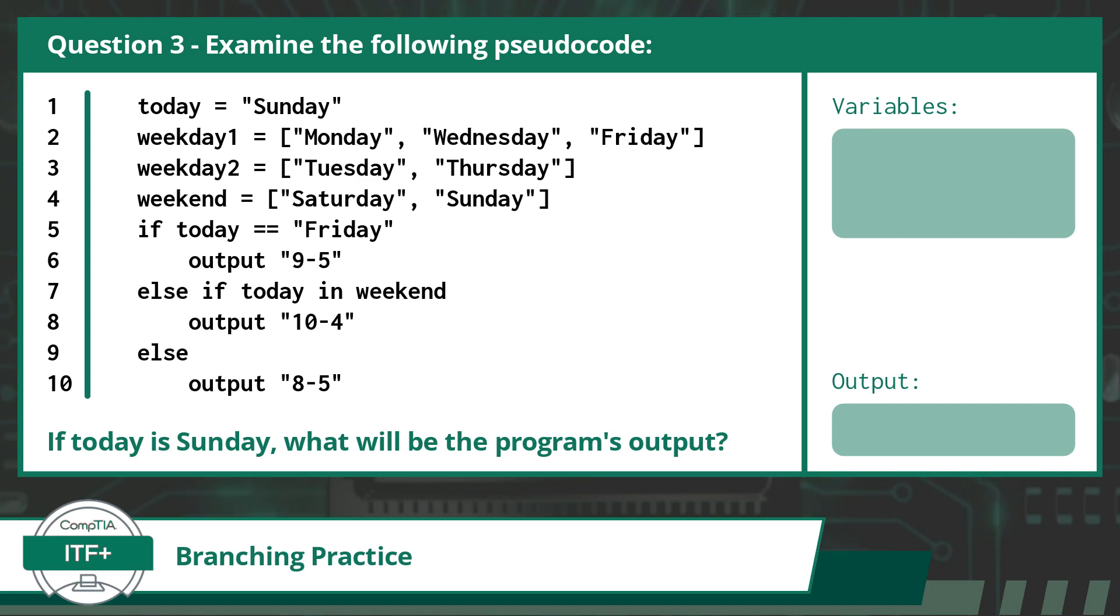So this piece of code is designed to output a business's operating hours based on the day of the week. It does include some containers, but I am confident you can handle this as it is not that much different from the previous two questions. In line 1, we have an assignment statement. This statement declares a variable with the identifier today and assigns it the string value of Sunday. Next we have our containers. Line 2 shows a container with the identifier weekday1 and stores the string values Monday, Wednesday, and Friday. These values can be used as a set or referenced individually. Line 3 shows another container with the identifier weekday2 and stores the string values Tuesday and Thursday. And line 4 shows yet another container with the identifier weekend and stores the string values Saturday and Sunday.